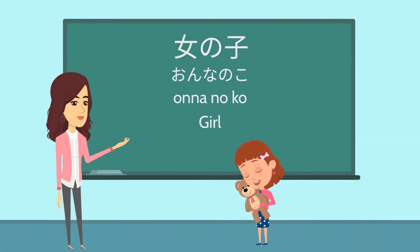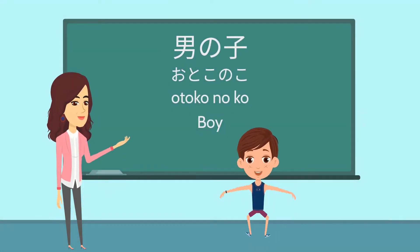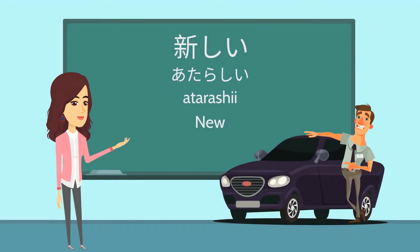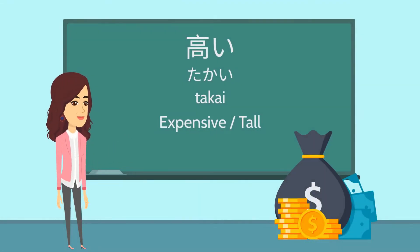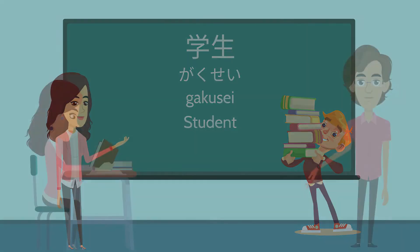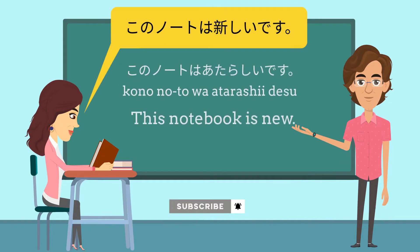女の子 (onnanoko - girl), 男の子 (otoko no ko - boy), 新しい (atarashii - new), 高い (takai - expensive/tall), 兄 (ani - older brother).